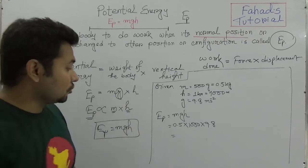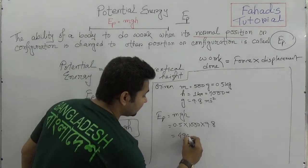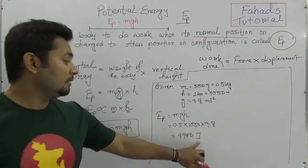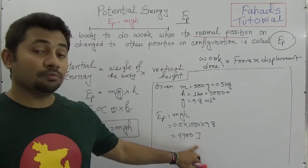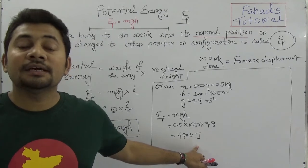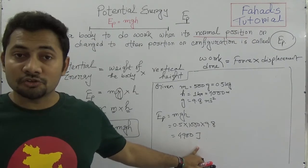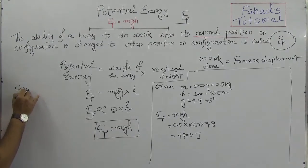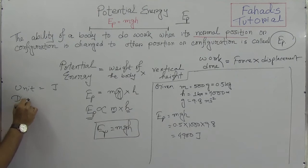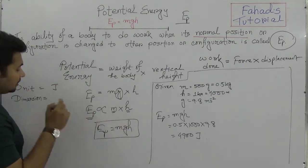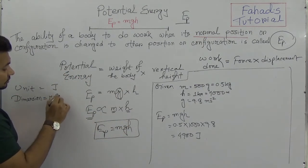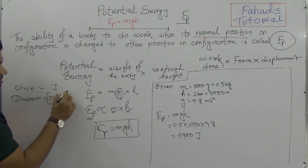The result is 4900 Joules. Why Joules? Because the unit of energy is Joule, so both potential energy and kinetic energy have the unit of Joule. The dimension of potential energy is the same as the dimension of work, which is ML²T⁻².